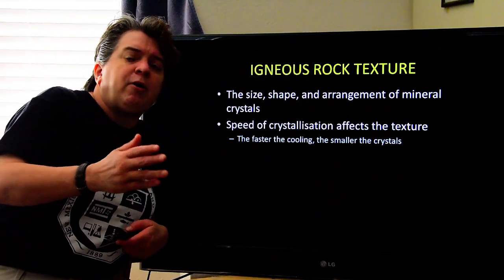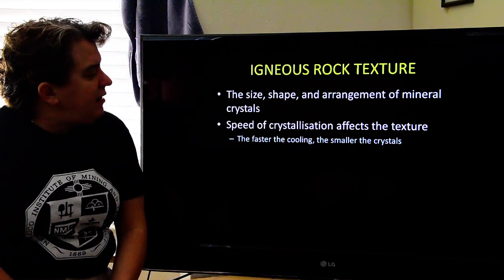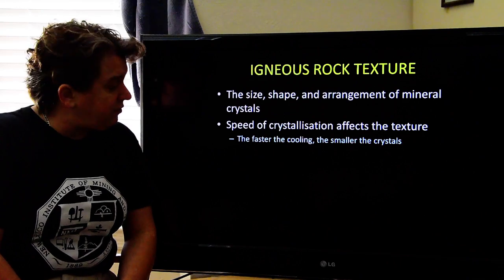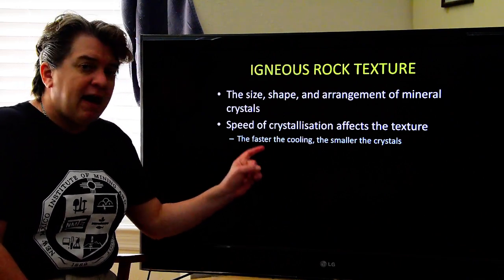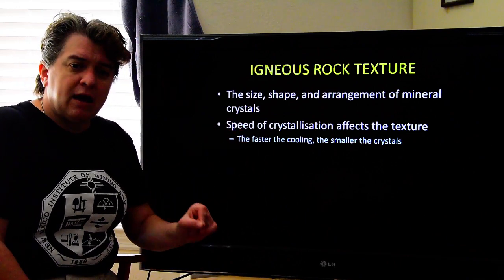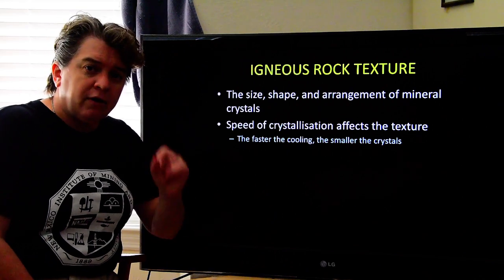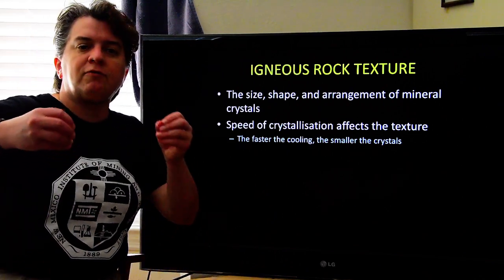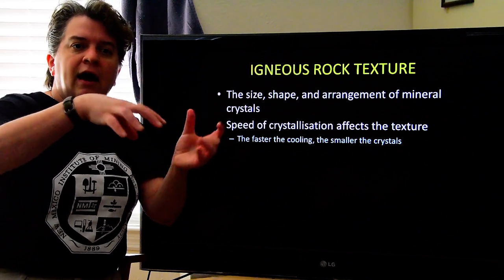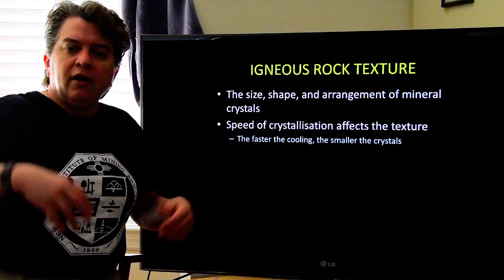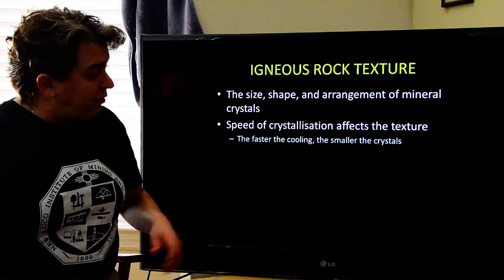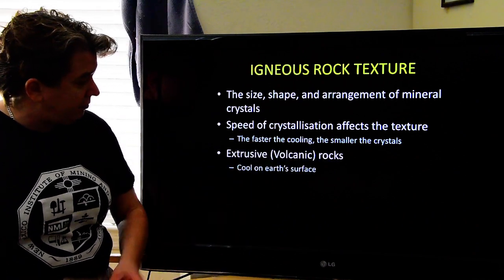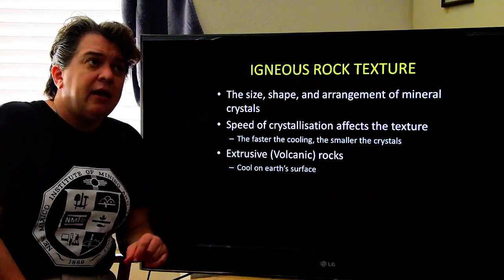When talking about igneous rocks, the speed of crystallization is what affects the texture. The faster the magma cools down, the smaller the crystals are, because there's just not a whole lot of time for all those little atoms to arrange themselves into big crystals. So the faster the cooling, the smaller the crystals.